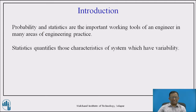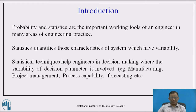Probability and statistics are important working tools available to an engineer while making decisions across many areas of engineering practice. Statistics quantifies the characteristics of systems which have variability. Engineers have to take decisions about outcomes of certain systems that have their own variability, and under such conditions they need to analyze those characteristics to take proper decisions. Statistical techniques help engineers in decision making where variability of decision parameters is involved.